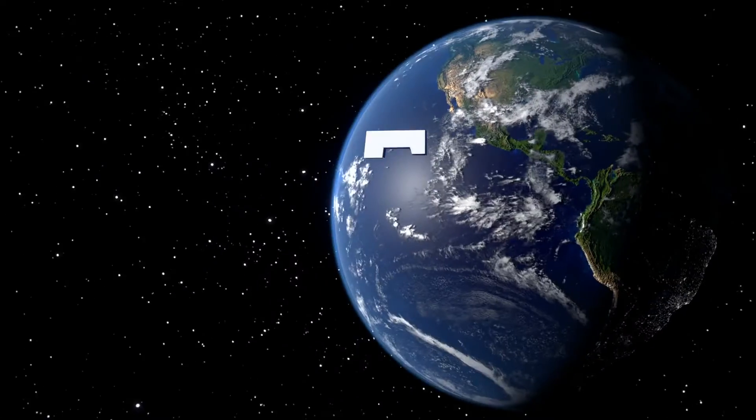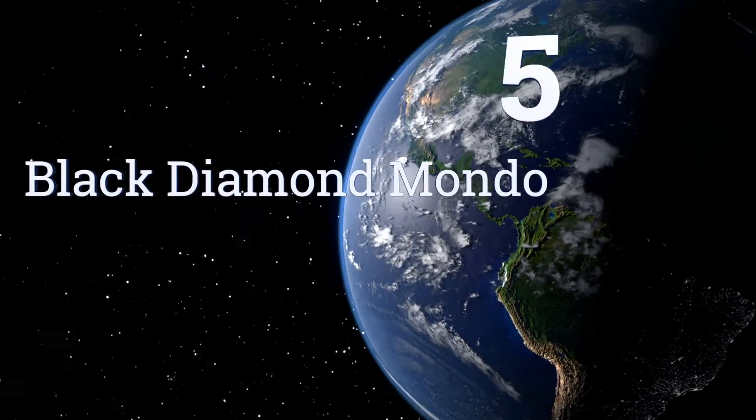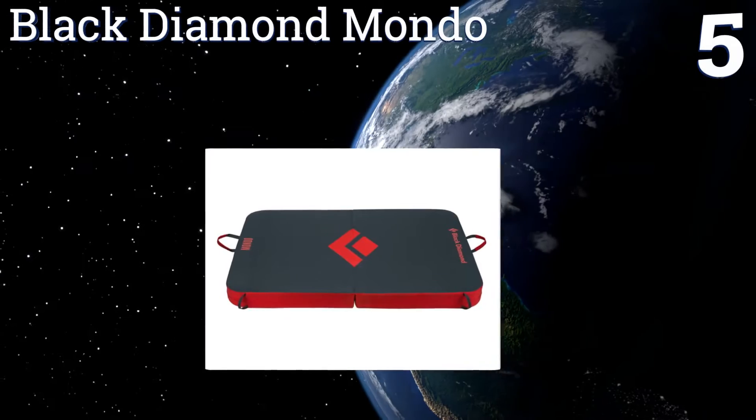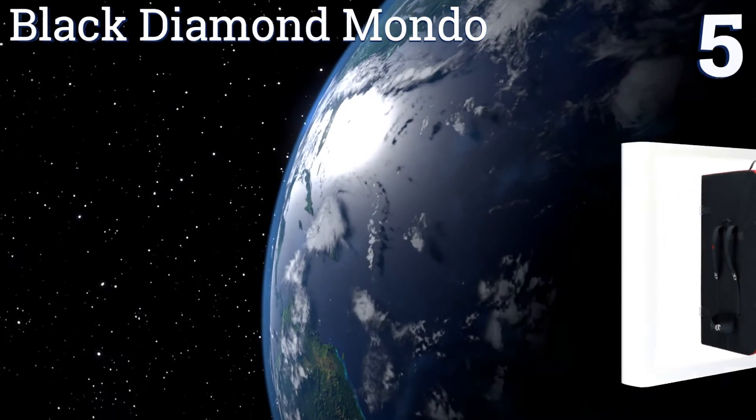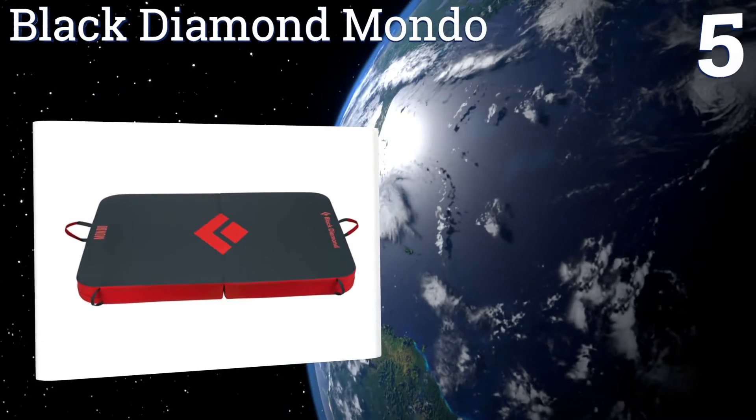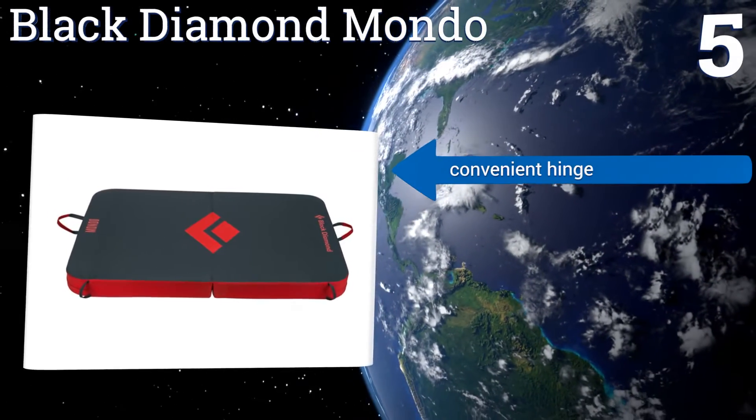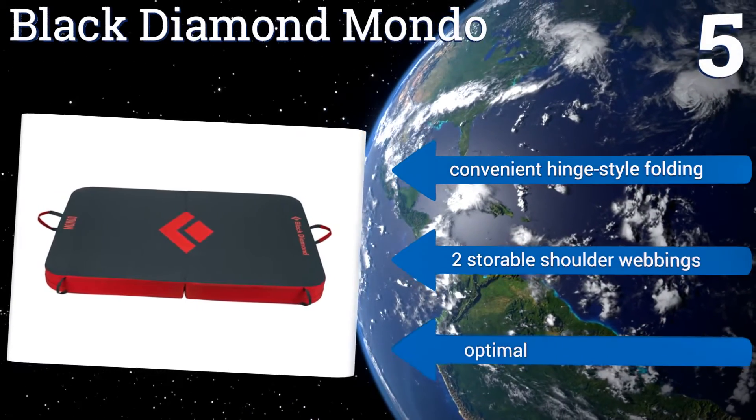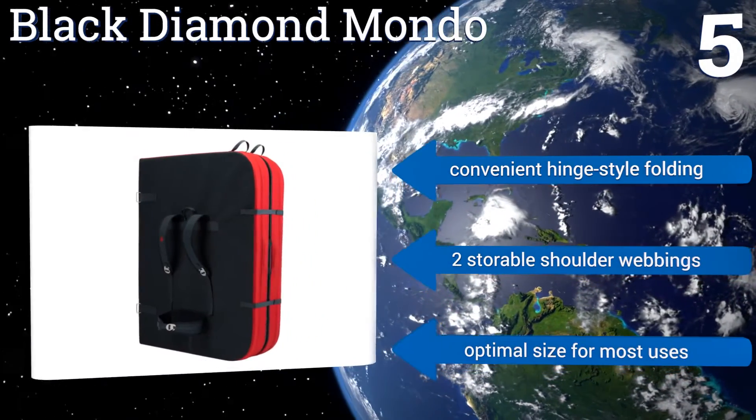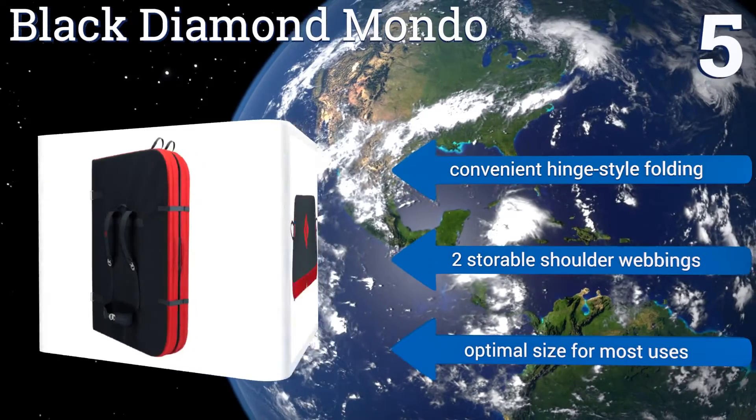Coming in at number five on our list, expertly constructed with a closed cell foam layup landing surface and a high compression foam foundation, the Black Diamond Mondo offers a firm but relaxed landing spot. Four corner grab handles make it easy to shuffle while spotting. It offers convenient hinge style folding and two storable shoulder webbings. It's the optimal size for most uses.